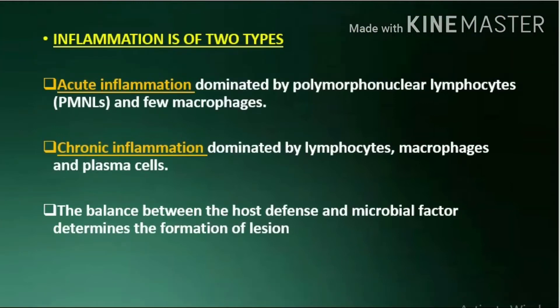Inflammation is of two types: acute inflammation, dominated by polymorphonuclear lymphocytes (PMNLs) and few macrophages; and chronic inflammation, dominated by lymphocytes, macrophages, and plasma cells.